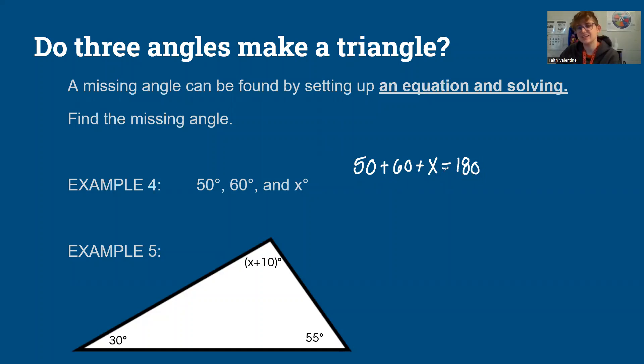Now this is just an equation. I do have other videos if you need to see them. But I'm going to combine my like terms and get 110 plus x equals 180. I'm going to undo this addition with subtracting. But I know that this x angle equals 70 degrees.